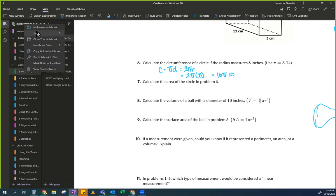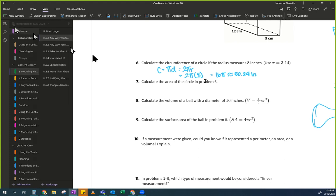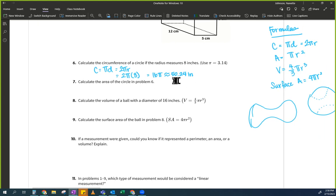And then you'll see, as soon as this thing sinks, the rest of my answer, 50.24, again, using the approximate symbol, it says calculate the area of the circle and problem six. So I'm just going to do the same thing. I'm going to pull over this area formula.